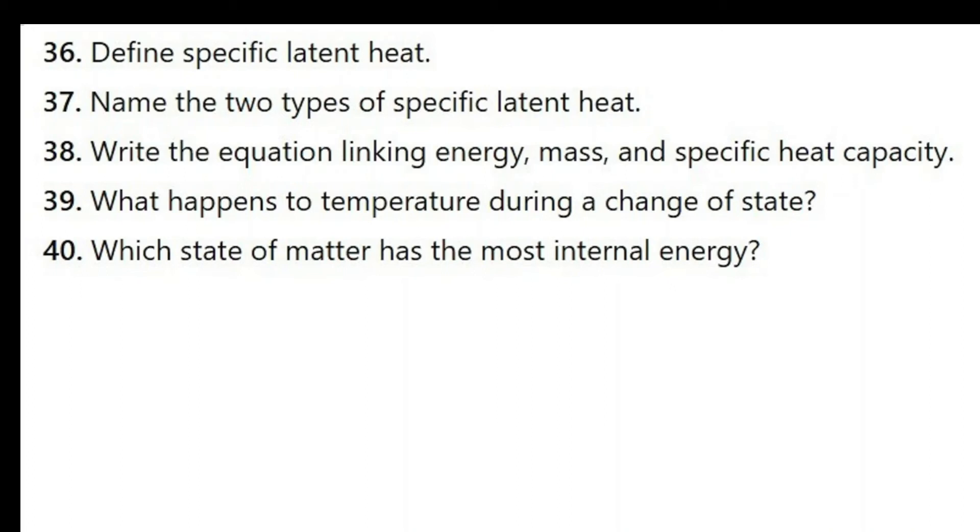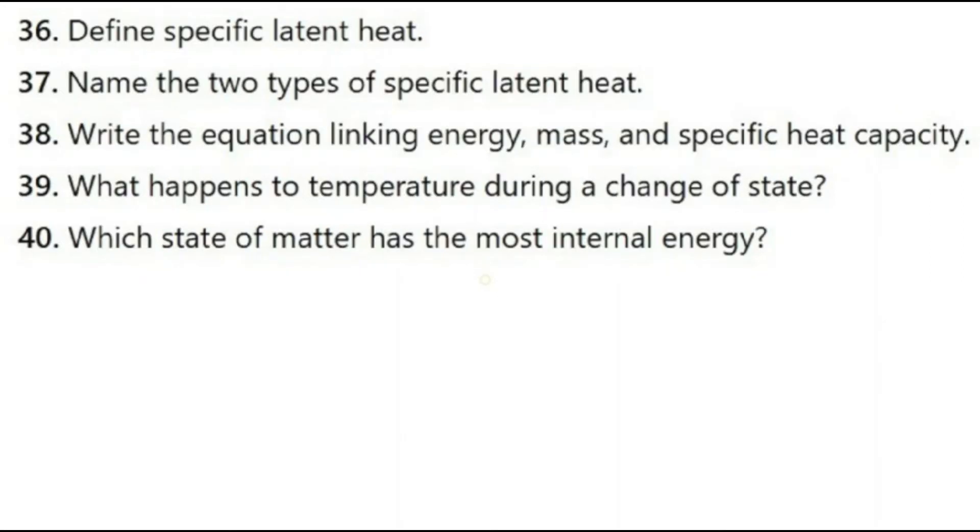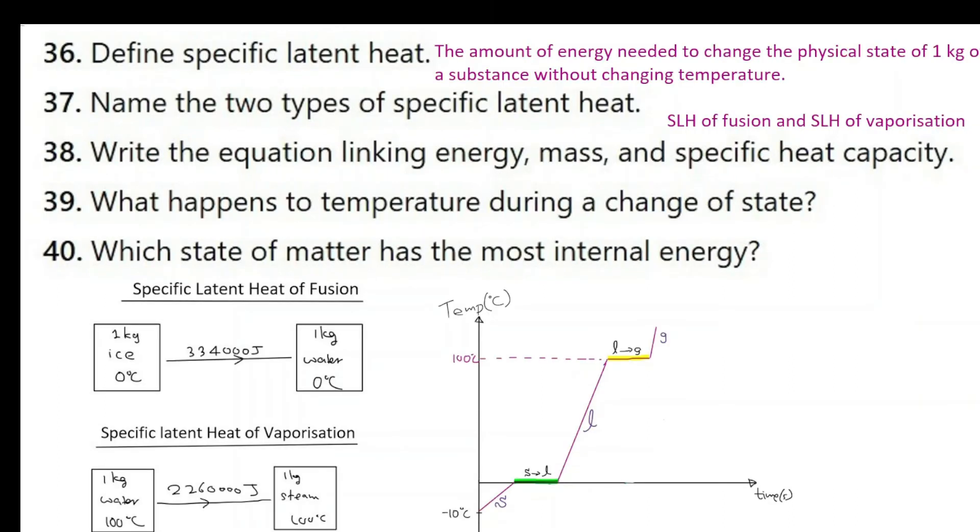Here is the next set of questions. Question number 36 to 40. Define specific latent heat. This is defined as the amount of energy needed to change the physical state of one kilogram of a substance without changing its temperature. Now you can see here on this graph the solid is being converted into liquid, the bit that I am highlighting here, or liquid is changing into a gas in the bit I am highlighting here in yellow. So what happens here is a phase change. So the definition is this. Name the two types of specific latent heat. You can have specific latent heat of fusion or specific latent heat of vaporization. So as the name implies fusion means melting which is what happens here. Vaporization means turning into a gas, and that happens here.